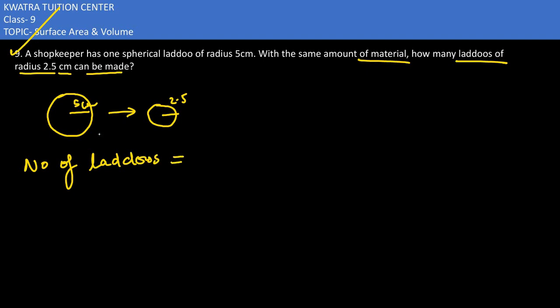So here in this case, you would be finding volume of the bigger laddu which has a radius of 5 cm, and then dividing it with the volume of radius 2.5 cm laddu.